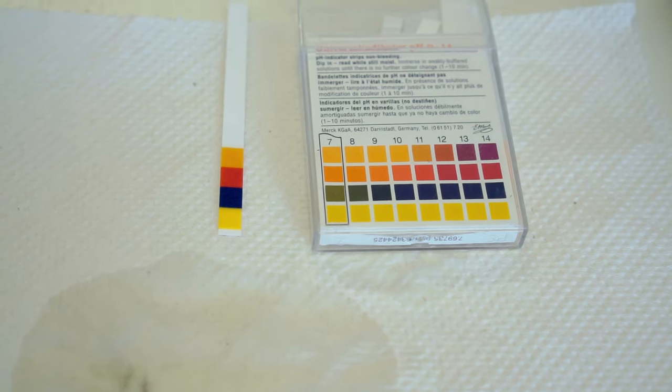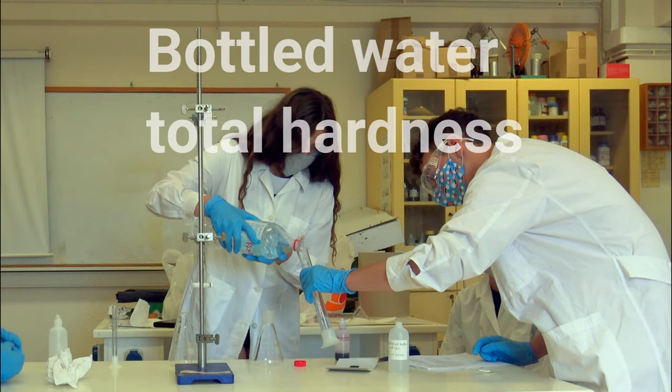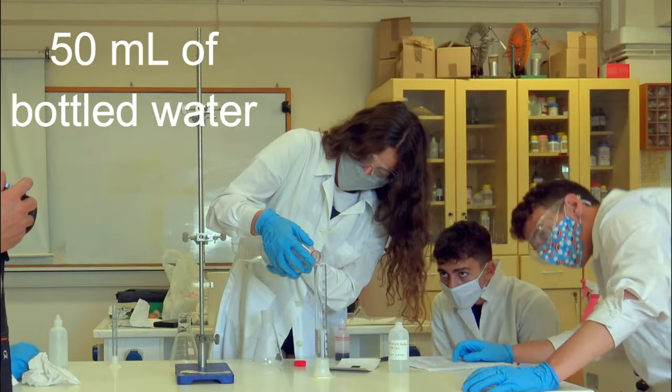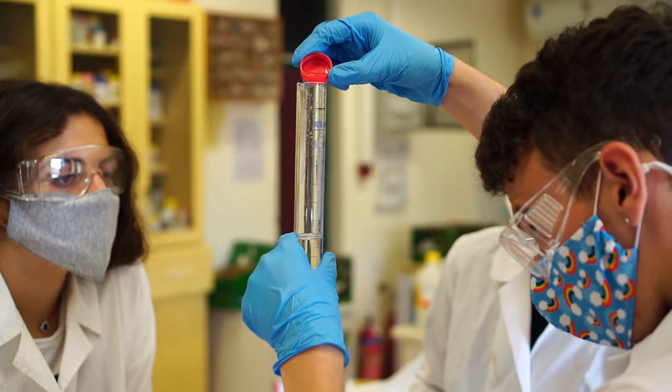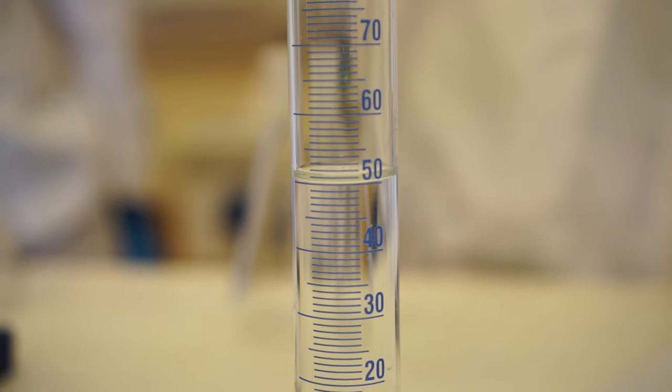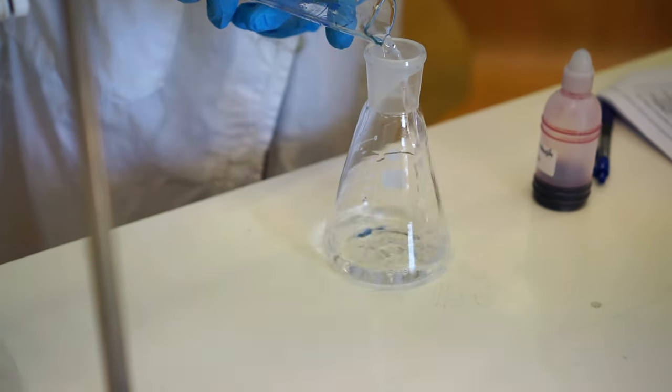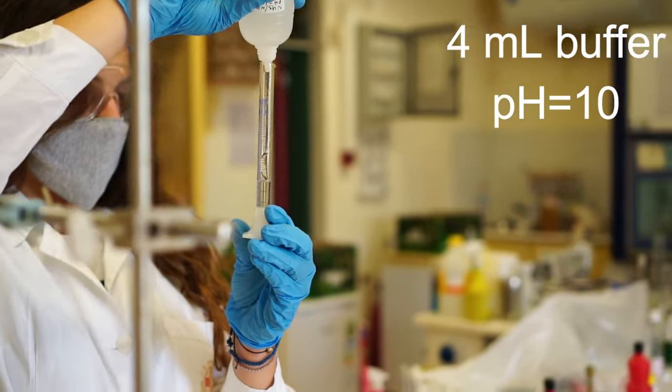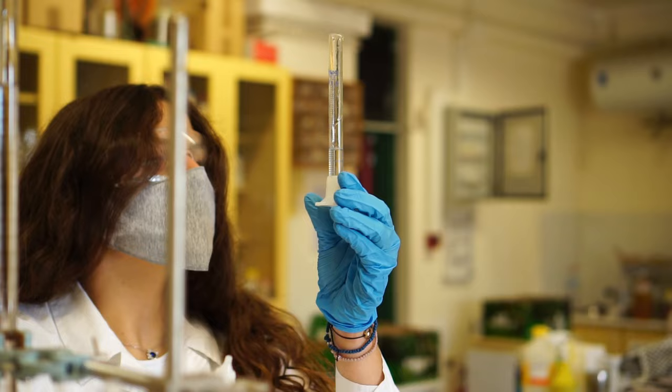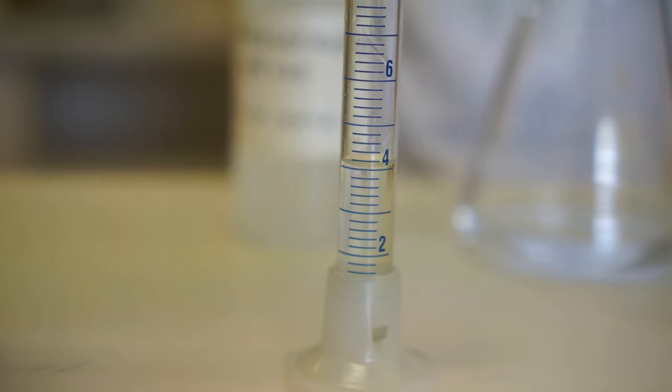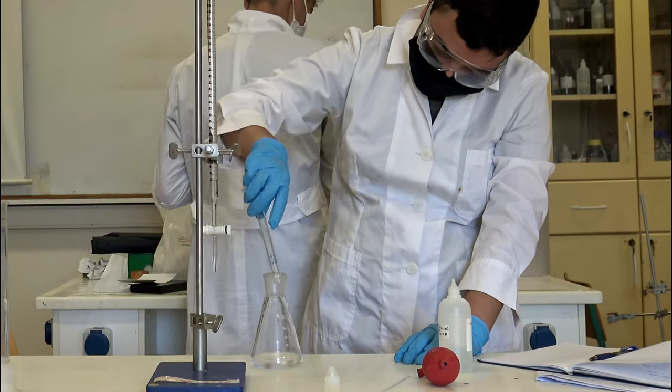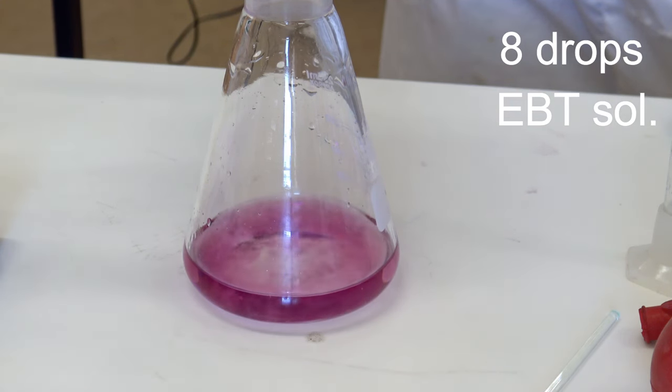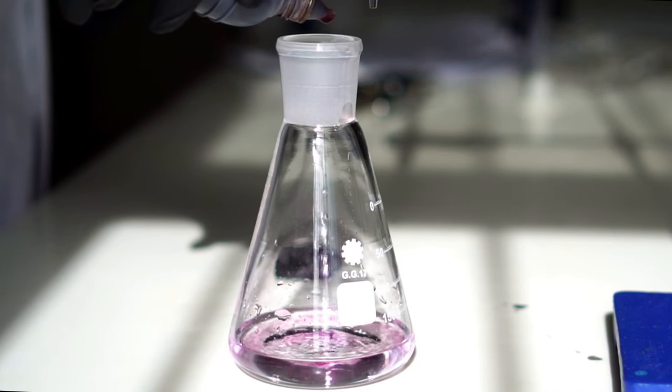First we analyzed some bottled water. Using a graduated cylinder, 50 ml of water are brought in a conical flask. Well, that was not really straightforward. Then we add 4 ml of buffer. And finally, 8 drops of the EBT indicator.